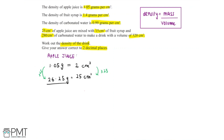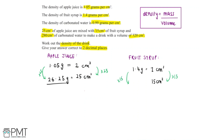Now let's find the mass of fruit syrup in the drink. Since the density of fruit syrup is 1.4 grams per centimetre cubed, we know that for every 1.4 grams of fruit syrup it has a volume of 1 centimetre cubed. The drink has 15 centimetre cubed of fruit syrup, so we multiply by 15 on both sides. 1.4 multiplied by 15 gives 21 grams of fruit syrup.